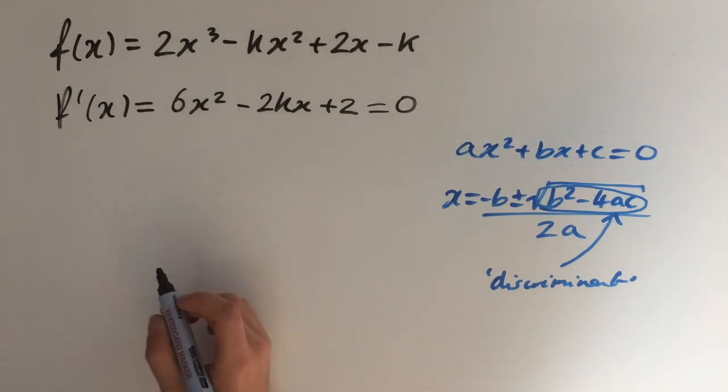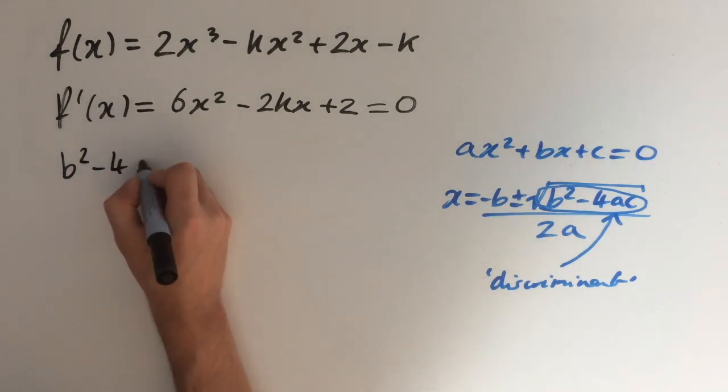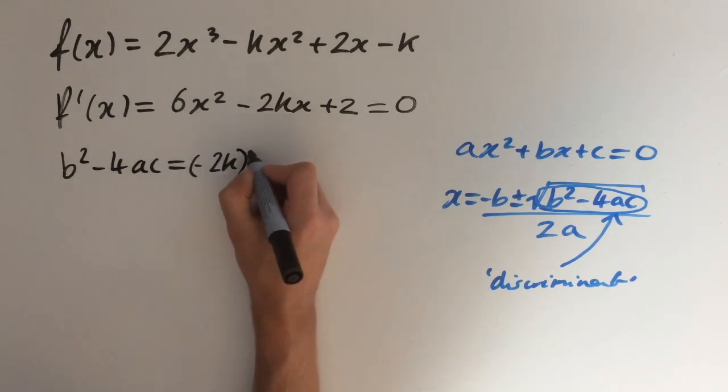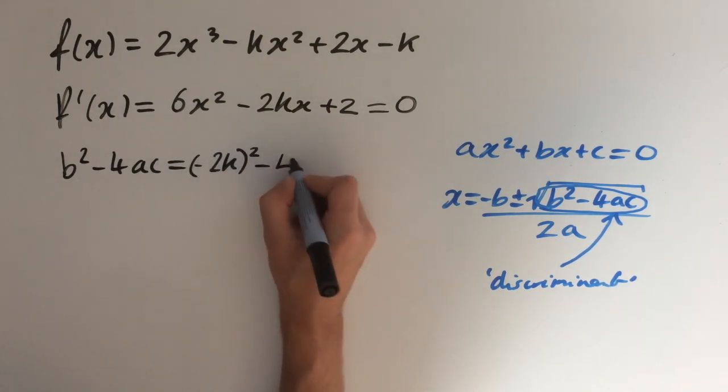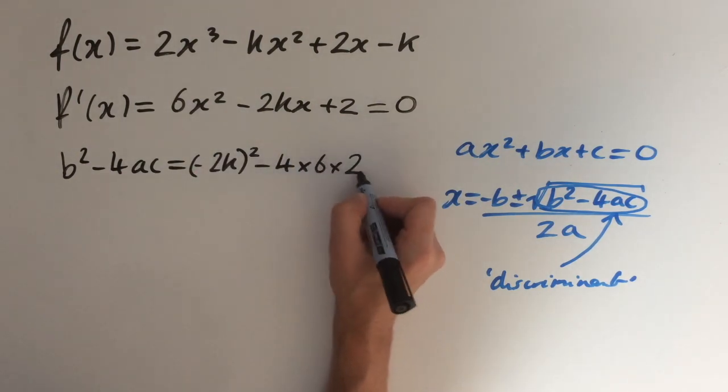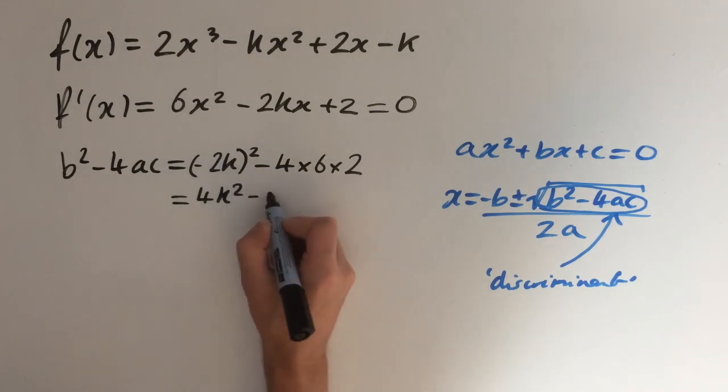So if we look at our derivative equation, its discriminant is going to be b² - 4ac = (-2k)² - 4 × 6 × 2. This simplifies as 4k² - 48.